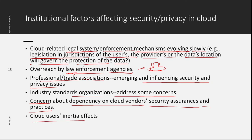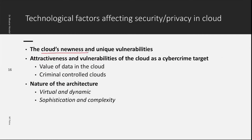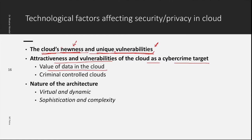Cloud's newness and unique vulnerabilities are a big concern. Cloud is evolving and new services are constantly coming, so new vulnerabilities come with this new technology — ones never seen before. Attackers can find those vulnerabilities and exploit them. The attractiveness and vulnerability of the cloud as a cybercrime target is significant, and the value of data on the cloud is huge. If an attacker gains access to a cloud, they get a massive amount of data. There are also some cloud services controlled by criminals.